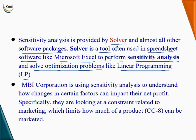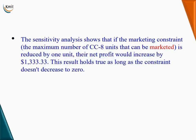MBI Corporation is using sensitivity analysis to understand how changes in certain factors can impact their net profit. Specifically, they are looking at constraints related to marketing, which limits how much of a product can be marketed. Sensitivity analysis shows that if the marketing constraint — like the maximum number of CC8 units that can be marketed — is reduced by 1 unit, their net profit would increase by a certain dollar amount. This result holds true as long as the constraint does not decrease to 0.